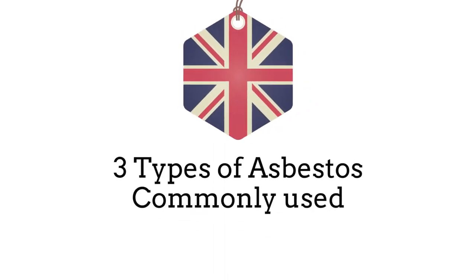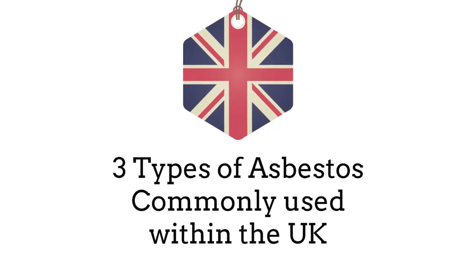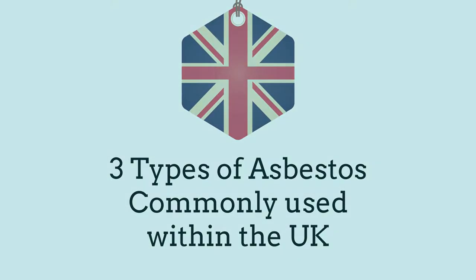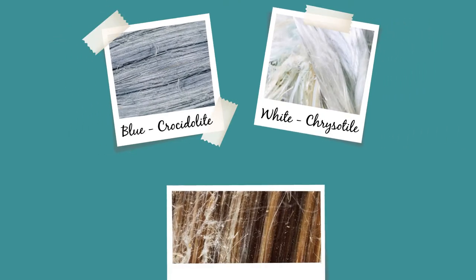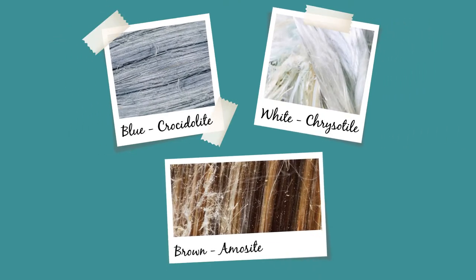There are three types of asbestos commonly used within the UK: Crocidolite (blue), Chrysotile (white), and Amosite (brown).